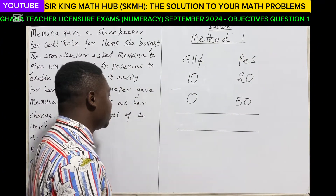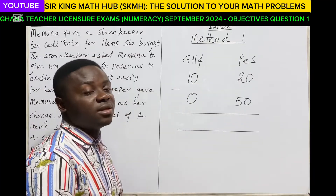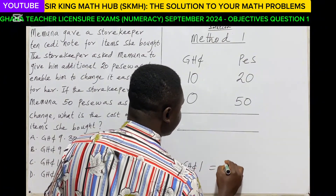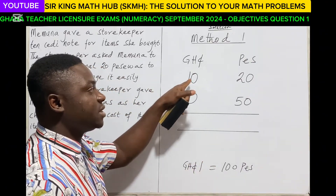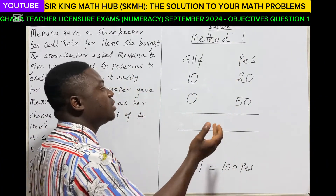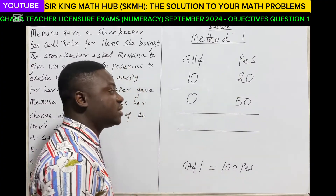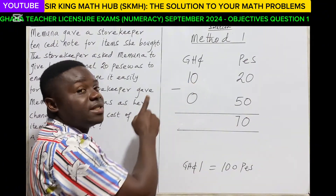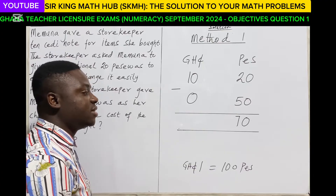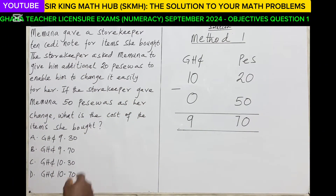We cannot get a negative answer at this point, so we move to the cedis column and borrow one cedi from the 10 cedis. Every one cedi is equivalent to 100 pesewas. Although we borrowed one cedi from the cedis column, since we are bringing it to the pesewas column, it becomes 100 pesewas. Then 100 pesewas plus 20 pesewas equals 120 pesewas, and 120 pesewas minus 50 pesewas equals 70 pesewas. We borrowed one cedi from the 10 cedis, so we are left with 9 cedis. Then 9 cedis minus 0 cedis equals 9 cedis. So the cost price of the item is 9 cedis and 70 pesewas.